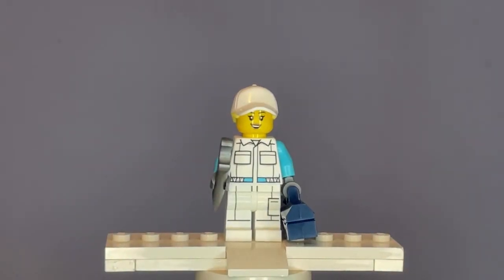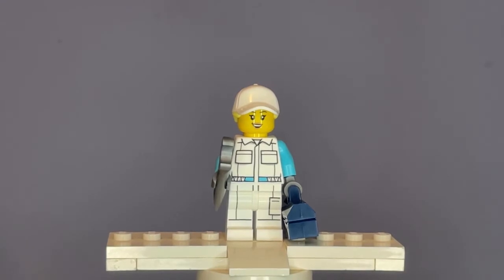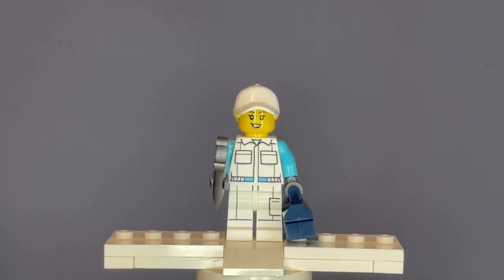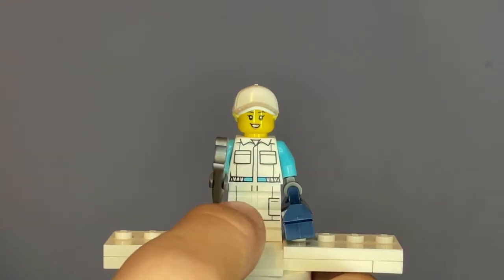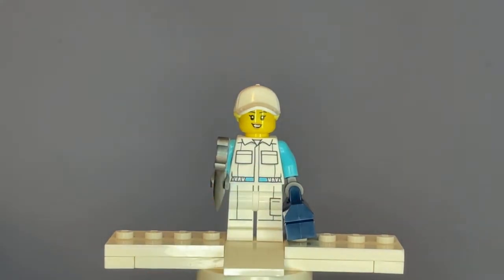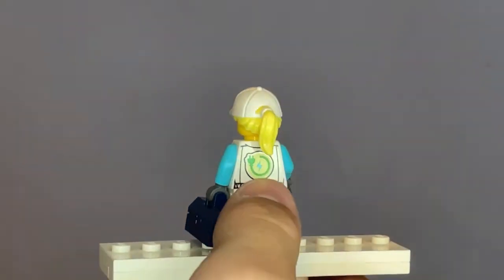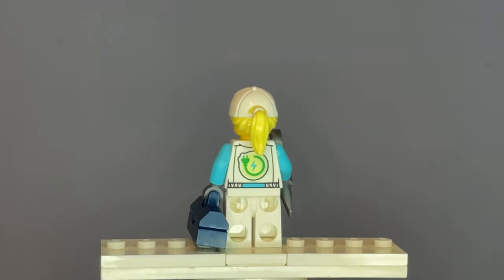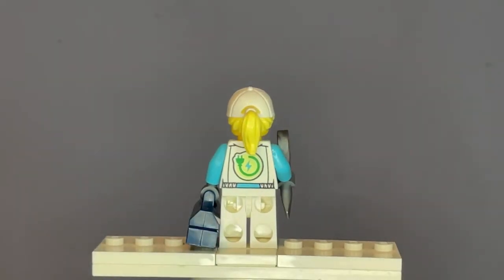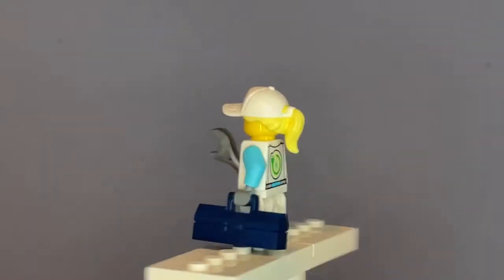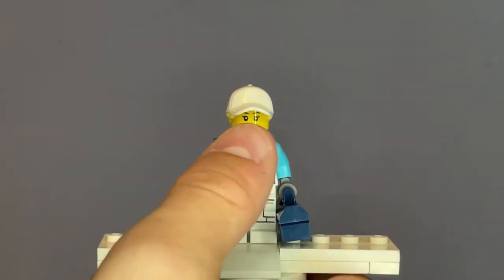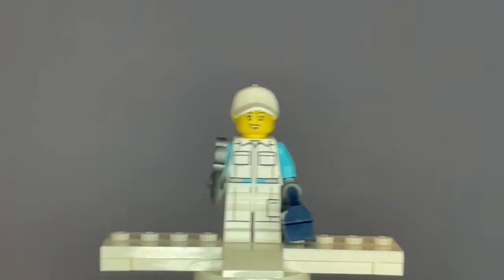First off, we have the female electric scooter mechanic. In this set, she comes with a new torso print as well as a new leg print where, all together, she looks like a racer of some sort. On the back of the body print, here's the electric scooter charging symbol to represent the brand she works for. She also has a reoccurring face print and a reoccurring hair and hat piece.